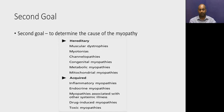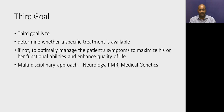The second goal is to determine the cause of the myopathy — causes can include various hereditary disorders like muscular dystrophies and myotonias, or acquired myopathies like inflammatory or toxic myopathies. The third goal is to determine whether a specific treatment is available. Apart from inflammatory myopathies, most will not have a specific treatment. If no specific treatment is available, we must optimally manage the patient's symptoms to maximize functional abilities and enhance quality of life, requiring a multidisciplinary approach involving neurology, PMR, and genetics.